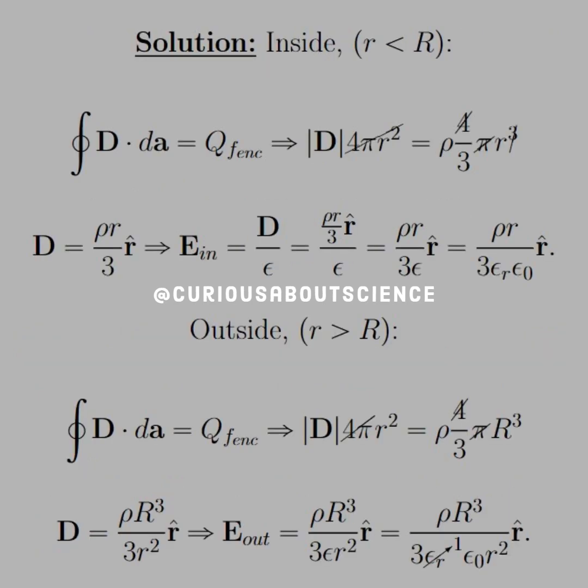So for a Gaussian surface inside the sphere, we know that our q enclosed is the surface area of a sphere, which is 4 pi r squared. And our free charge is rho times the volume of a sphere, which is 4 thirds pi r cubed.